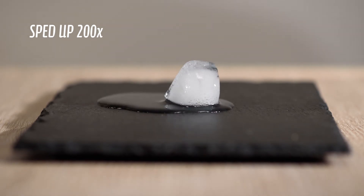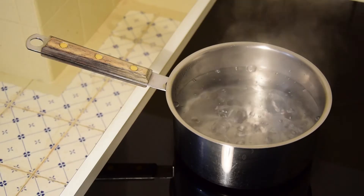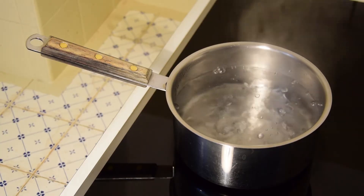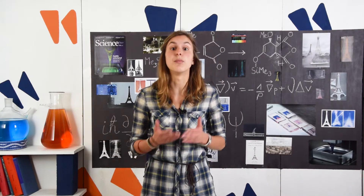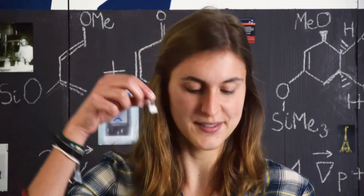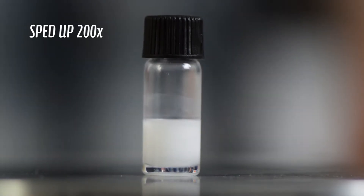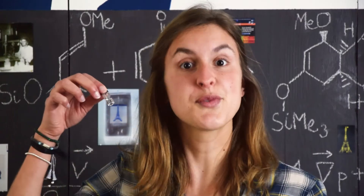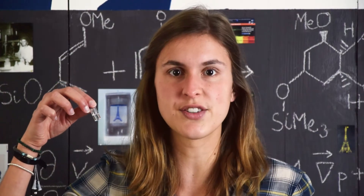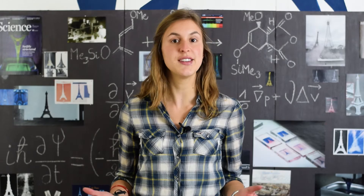Heat up an ice cube above 0 degrees and it becomes liquid water. Heat up liquid water above 100 degrees and it becomes steam. These are two examples of phase transitions. At certain temperatures, pure substances change state — they go from a solid to a liquid or from a liquid to a gas. But if we heat up this opaque liquid, it becomes transparent. So we have a phase transition from a liquid to another liquid. This is what we'll try to understand today in the Lutetium project.